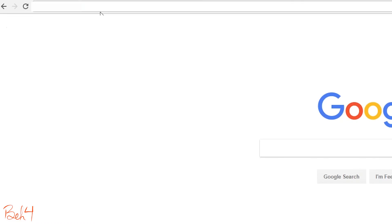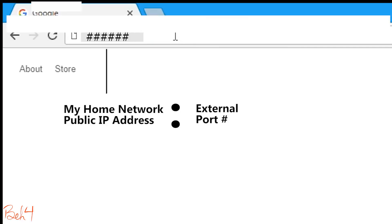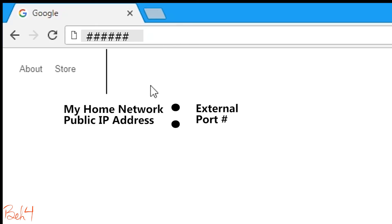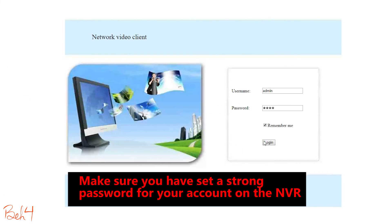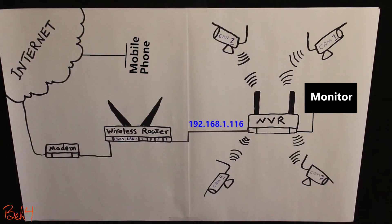With port forwarding in place, when I'm outside the network on my computer, I can open a browser and type in the public IP address of the NVR, then a colon and the external port number, and connect to the NVR. But that's not necessarily very secure either, because right now my network has an open port — so I'm not even going to use port forwarding.